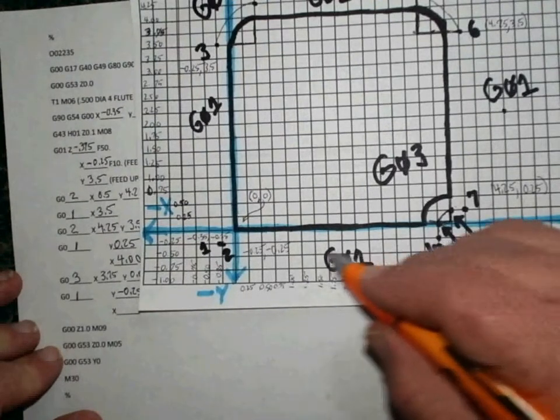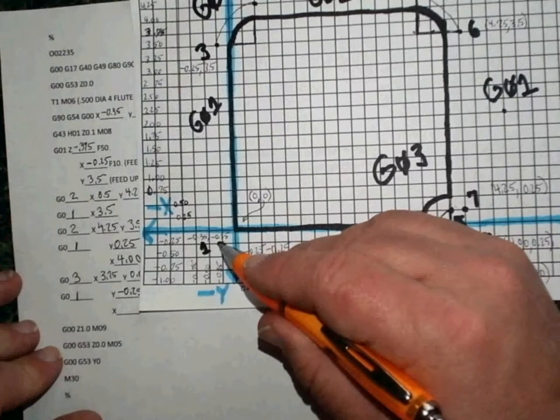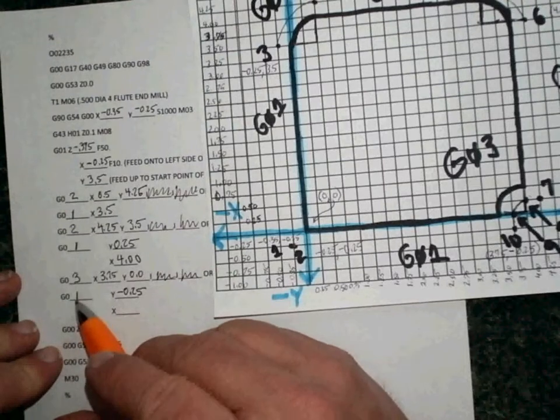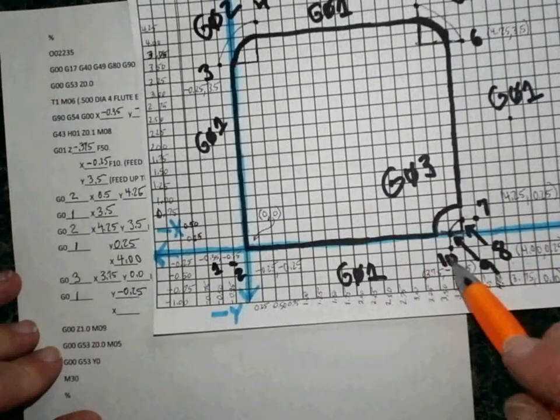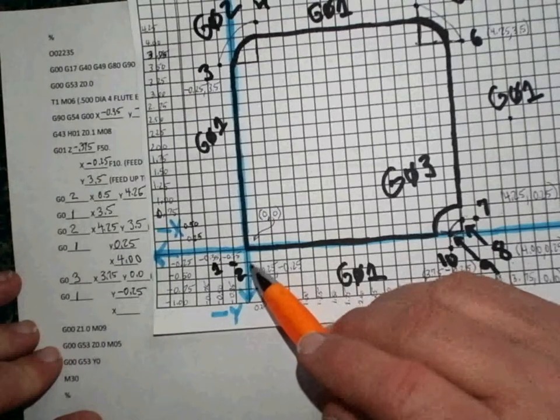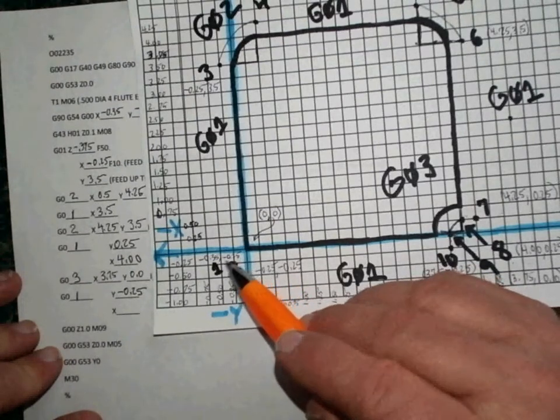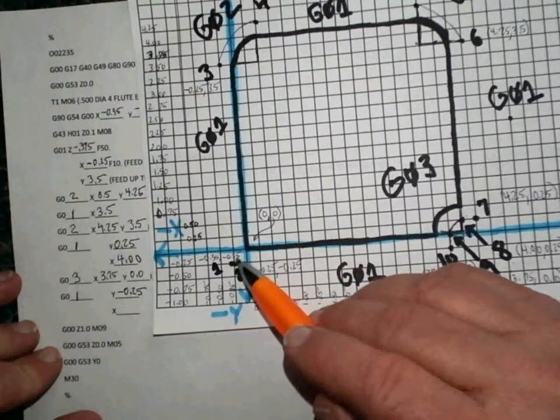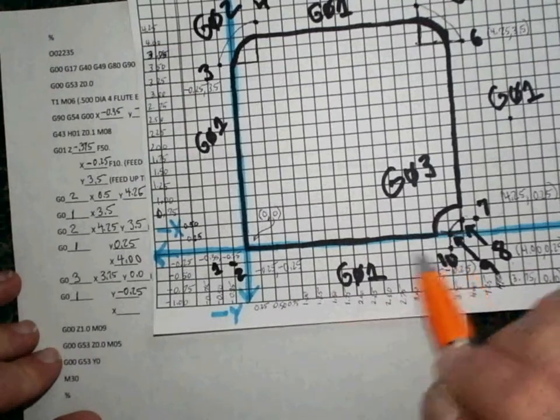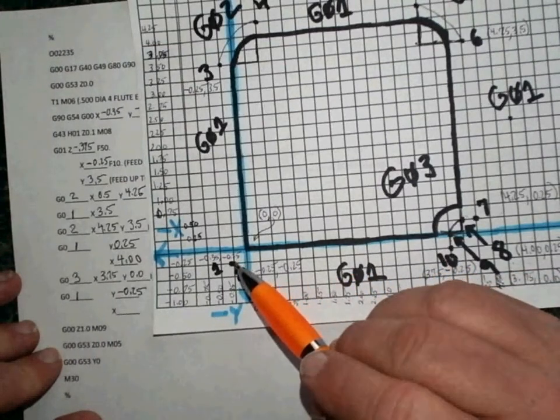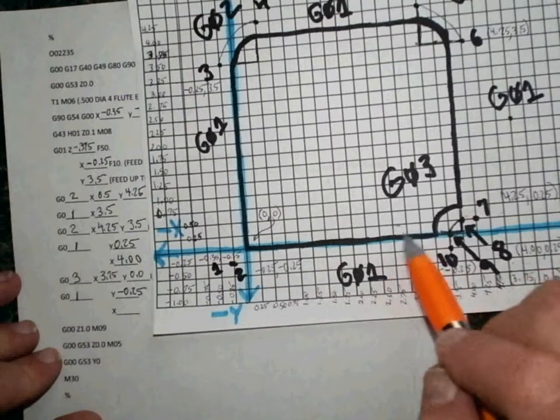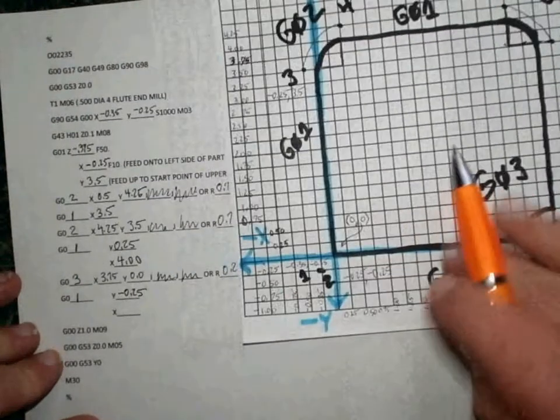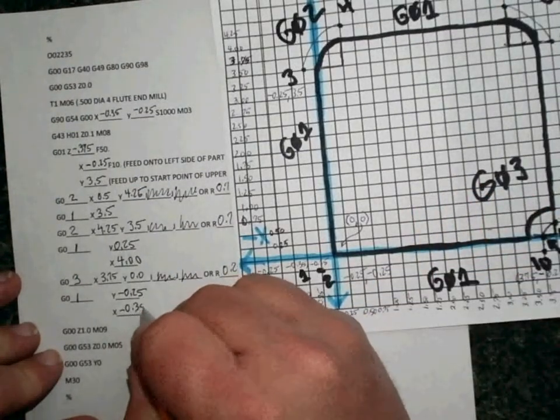The only move left at that point is a straight line, G01, to our original point. So we can fill this in. We already have a G01 here, and this move is in the X-direction to our original point, our starting point, which was minus 0.35. Again, the Y doesn't matter. We're staying at minus 0.25 as we move from here to here, so we don't need to specify the change in Y. We need to specify where we're going to end up on the X-axis, which is negative 0.35. So we'll pencil that in there, negative 0.35.